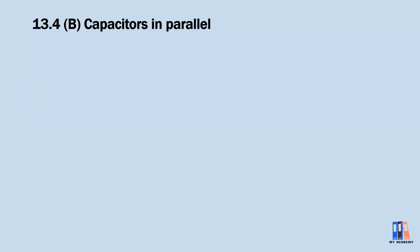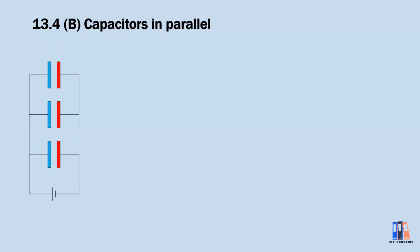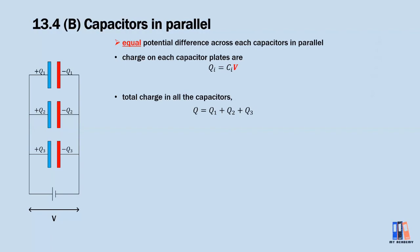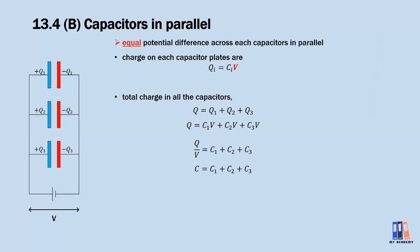Next, we look into capacitors in parallel. With three capacitors in parallel, components in parallel have equal potential difference, which in this case equals the EMF of the battery. The battery charges each capacitor until all capacitors have the same potential difference. To calculate the charge on each capacitor, we use Q = CV, where V is the EMF of the battery. The charge stored depends on the capacitance of each capacitor. We calculate the total charge using Q = Q₁ + Q₂ + Q₃, substitute the formula for each Q, divide by V, and find that the effective capacitance equals C₁ + C₂ + C₃.